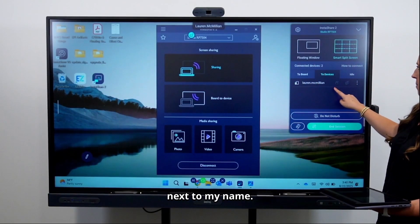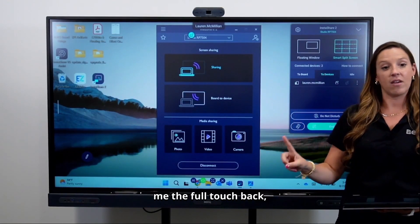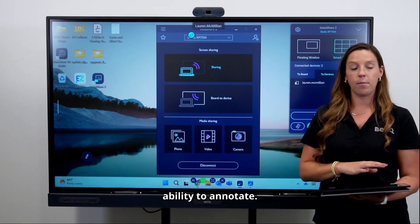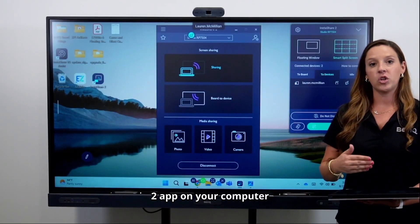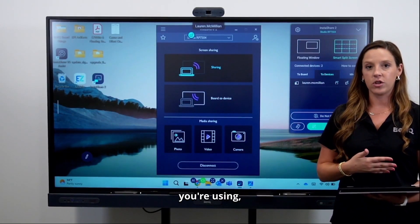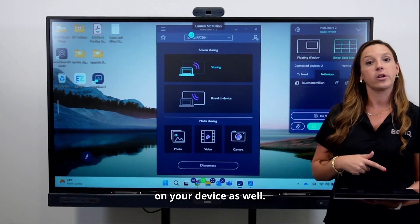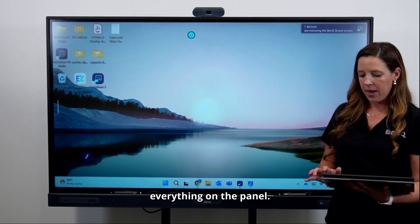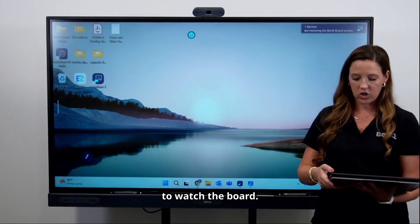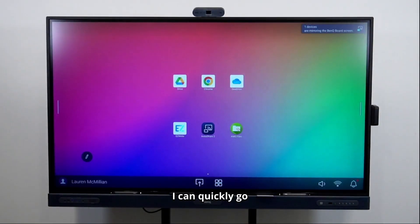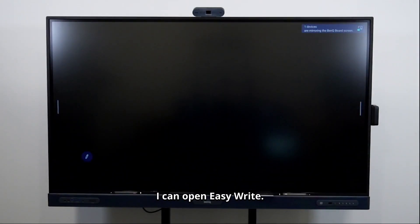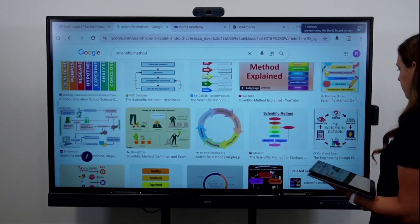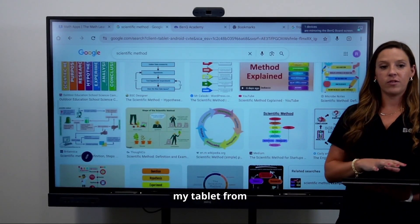There are two icons next to my name. I can select the finger one, that's going to give me full touchback, or I can select the notepad with the paper, which gives me the ability to annotate. Now in the InstaShare 2 app, you'll have these matching icons that you have to toggle on on your device as well. So I'm going to tap my touchback and I can now control everything on the panel. I can quickly go to my home screen, I can open EasyWrite, go back to my home screen, open Chrome. So I have lots of different options using my tablet from anywhere in the room.